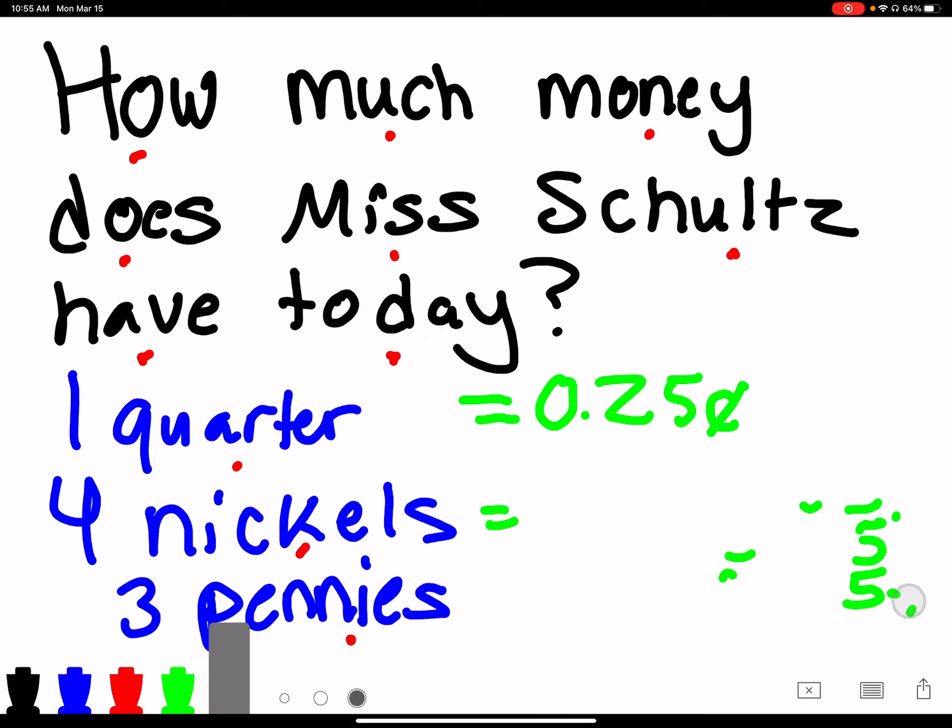We have 20 cents worth of nickels. I'm going to erase this section right here. And then I have three pennies. How much is one penny worth? One cent. And since we have three, if we add one plus one plus one, we would get three cents.